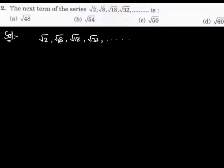Each number inside the square root is a multiple of 2, so we can rewrite the given series as root 2, under root 4 times 2 (that is 8), under root 9 times 2 (that is 18), and under root 16 times 2 (that is 32), and so on.